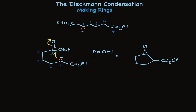We can track the carbons. In this upper structure, here's the enolate carbon, which is now here, and which is now here in the product. And the carbonyl carbon that the nucleophile adds to is here, and here, and here.